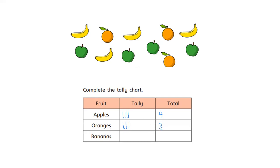Now bananas, my last row, how many bananas are there? Let's count together: one, two, three, four bananas. My tally lines are going a bit funny, but try and draw them as neatly as you can on your sheet. Try and draw them neater than Miss Bangham has drawn hers. Four tally lines and my total is four.